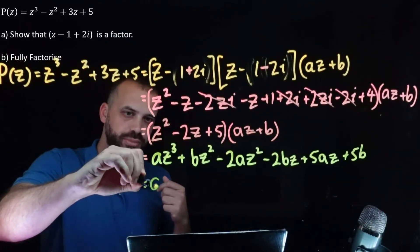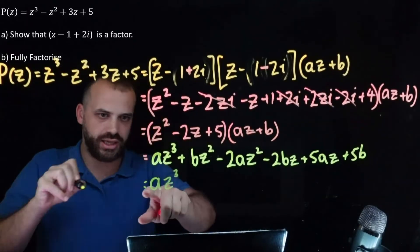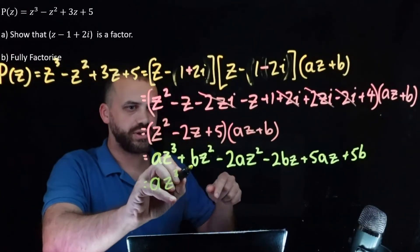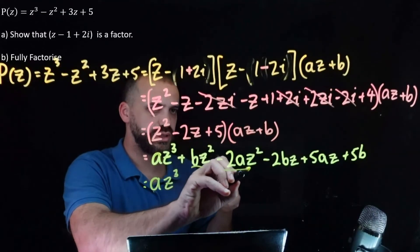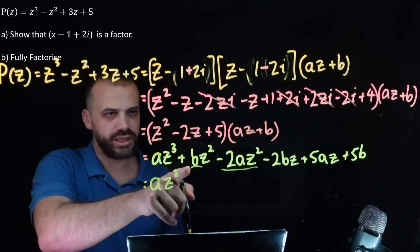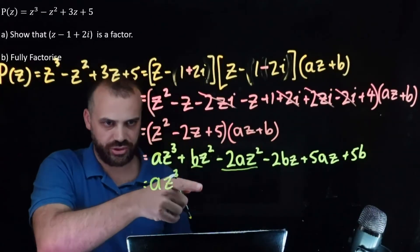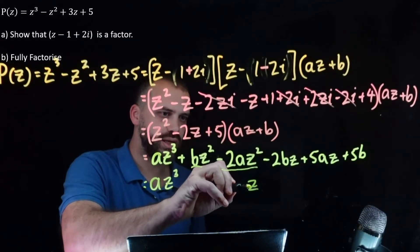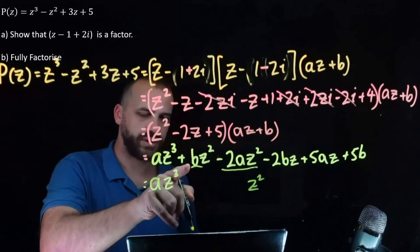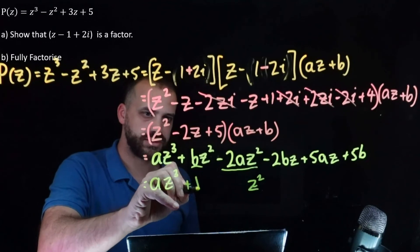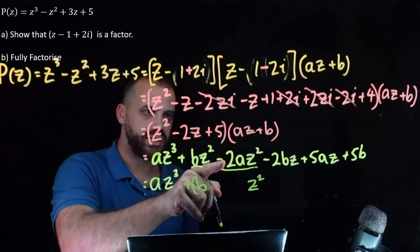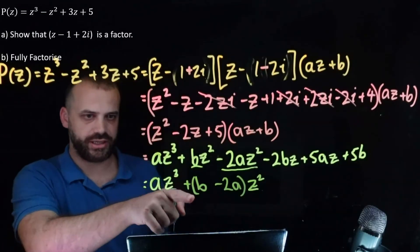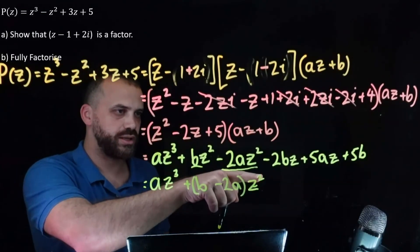Now I'm going to group my like terms. I get an az cubed. I have some like terms for the z squared: there's a z squared from one term, and we've got a plus b and a negative 2a, giving b minus 2a for the z squared coefficient.